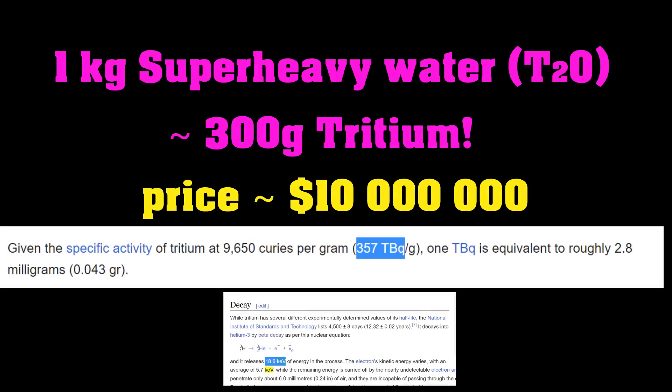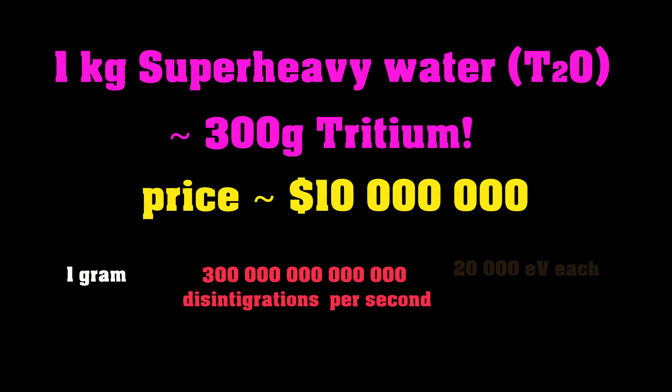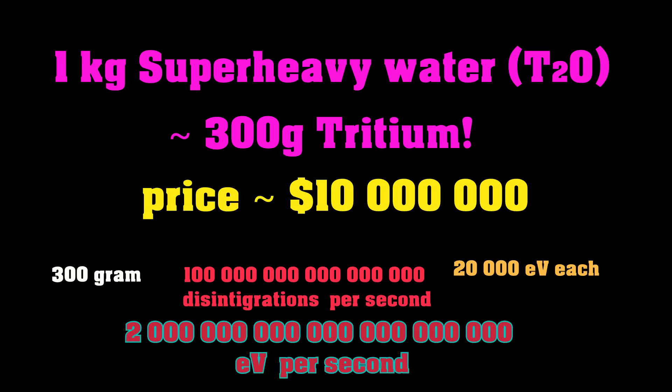And 1 gram of tritium does 300 trillion disintegrations per second, each releasing some 20-odd kiloelectron volts. So, we can calculate how many kiloelectron volts this is going to release per second, which is a heck of a lot. Then you need to multiply that by the 300-odd grams of tritium that we have, meaning that we are dumping this many electron volts into our 1 kilogram of water per second. Yeah, that doesn't mean a lot to me either.